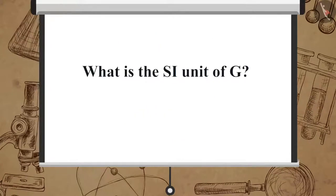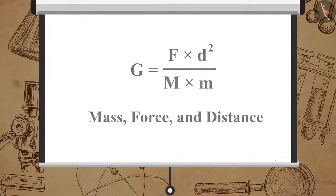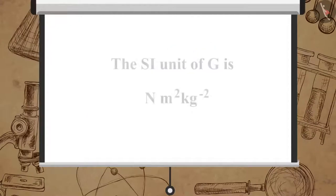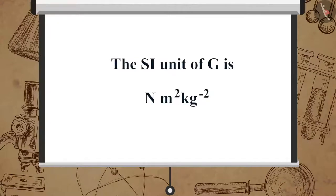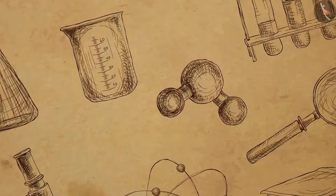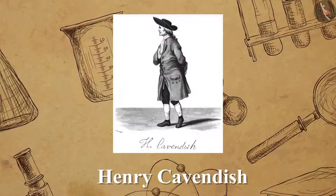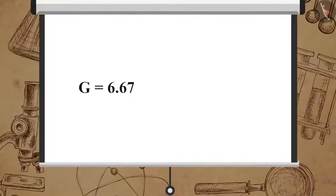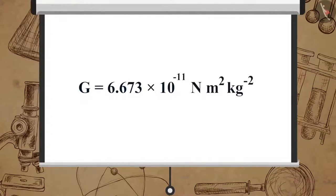We can find the SI unit of G by substituting the units of mass, force, and distance in the equation. The SI unit of G is Newton meter square per kilogram square. The accepted value of G is equal to 6.673 × 10⁻¹¹ Newton meter square per kilogram square.